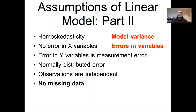In this lecture, we're going to continue our discussion of the assumptions of linear models. In the previous two lectures, we talked about the assumption of homoscedasticity — constant variance — and how we can relax that by explicitly modeling the variance. We also talked about the assumption that there's no error in the x's, and how we can accommodate that using what's called an error-in-variables model.